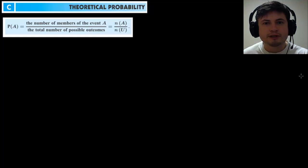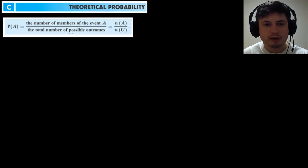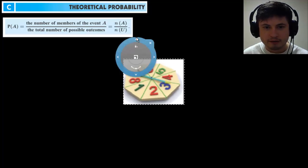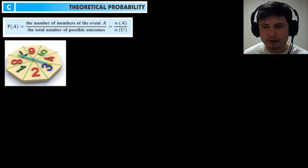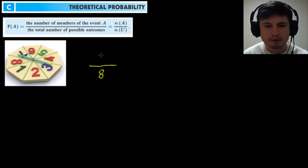To make this more visual, let's look at this example. The formula is: probability of something happening equals the number of members of the event divided by the total number of possible outcomes. Let's take a look at this spinner right here — it has eight possible outcomes, so the bottom of the equation will be divided by eight. Let's say I'm looking for what is the chance I'll get an even number. There are four even numbers, so the probability is four out of eight, which is 0.5.